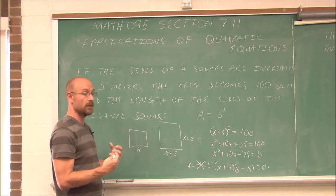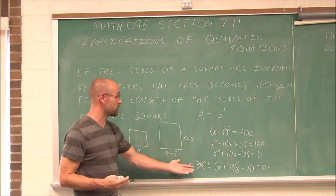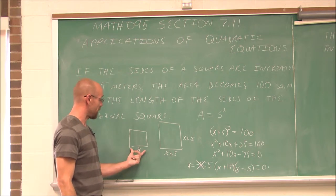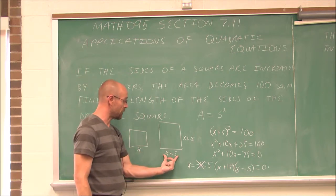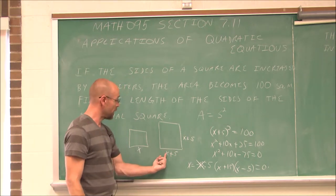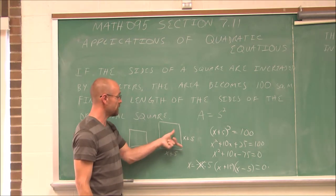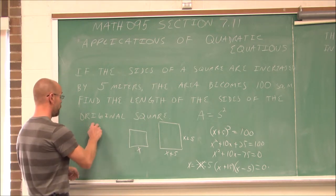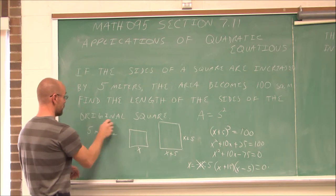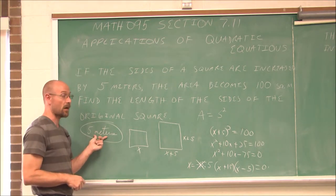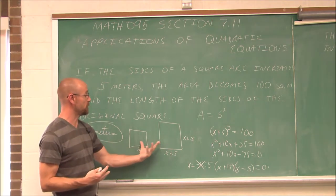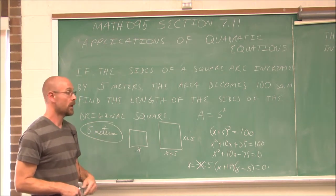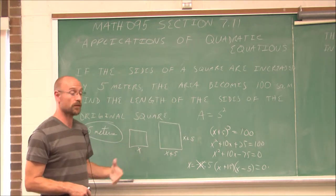So we use x = 5. Let's check: if the side is 5 and we increase it by 5 meters, the new side is 10, and 10 times 10 is indeed 100 square meters. The length of the sides of the original square was 5 meters. We include units because it's an application problem. We applied a quadratic equation and read the problem at least four times as we worked through it.